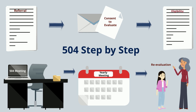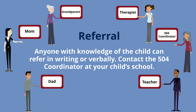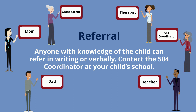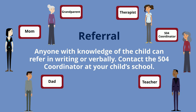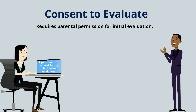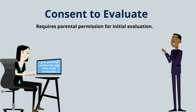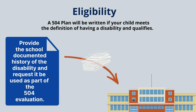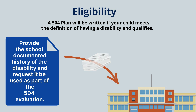504 Step by Step. Referral: anyone with knowledge of the child can refer in writing or verbally — contact the 504 coordinator at your child's school. Consent to evaluate: requires parental permission for initial evaluation. Eligibility: a 504 plan will be written if your child meets the definition of having a disability and qualifies. Provide the school documented history of disability and request it be used as part of the 504 evaluation.